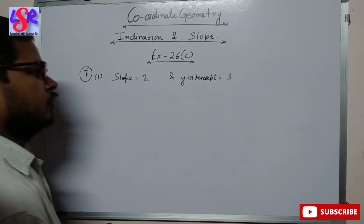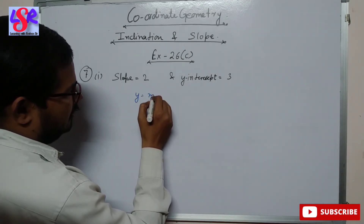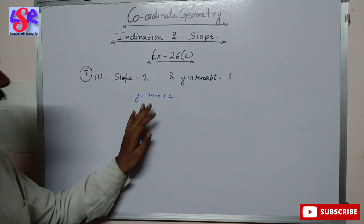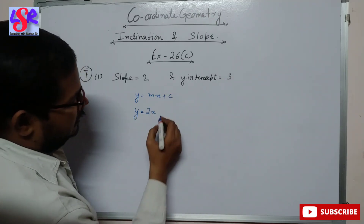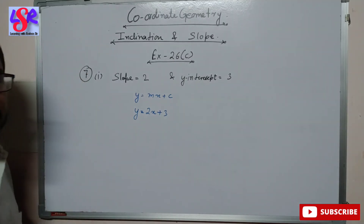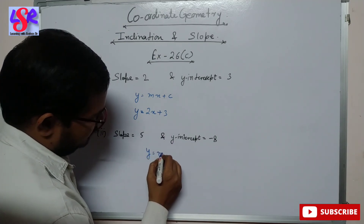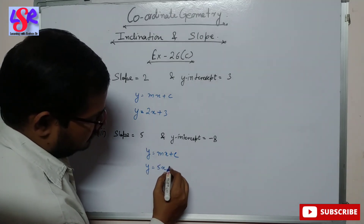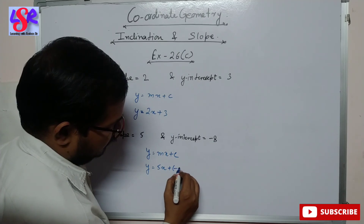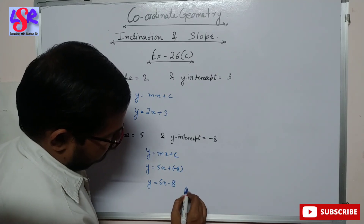Now let's form the equation in which the slope is 2 and the y-intercept is 3. Using y equals mx plus c, the answer is y equals 2x plus 3. For another part, the slope is 5 and y-intercept is minus 8. Using the general equation y equals mx plus c, with m equal to 5, we get y equals 5x minus 8 as the answer.